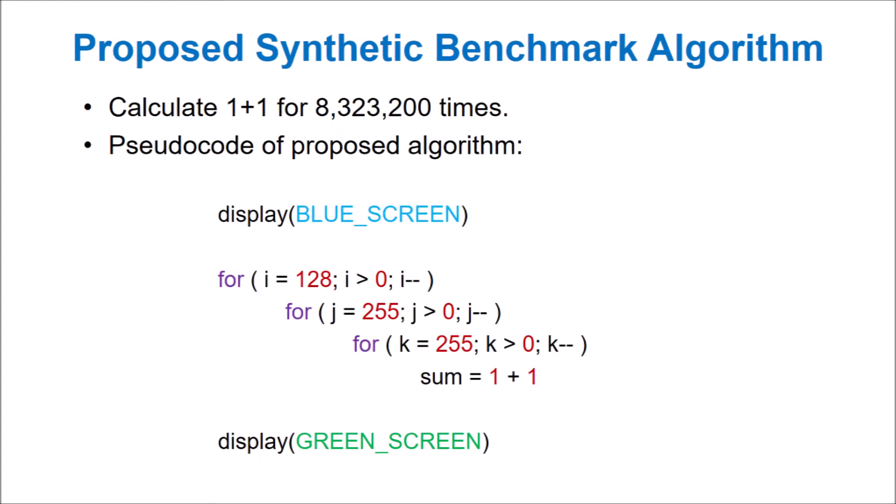Our proposed synthetic benchmark algorithm is to calculate 1 plus 1 over 8 million times. As shown in the pseudocode, this will work as follows. Just before the test starts, the console will display a blue screen. The program will then run a triple-nested for loop.